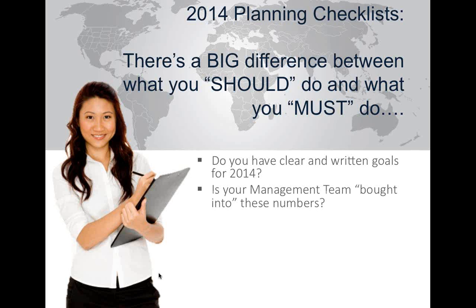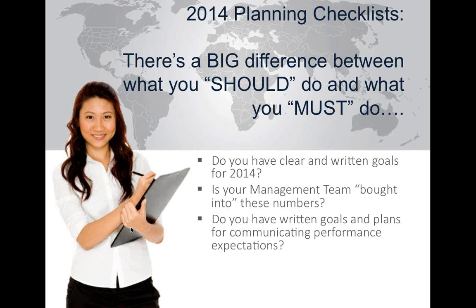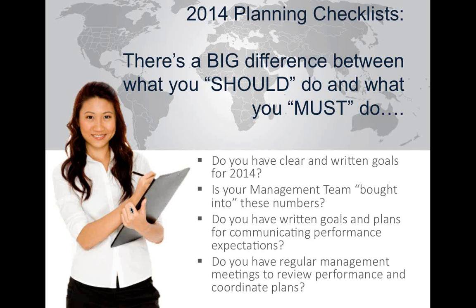Number two: if you've decided on your outcomes and goals for 2014, do you have your management team bought in? Management buy-in comes from your vision and communication about where the company is going, having it defined at the manager level, and having compensation models matched to incentivize and reward the behaviors you want. Do you have written goals and plans for communicating performance expectations? That comes down to detailed metrics and regular review processes so you know where you are on a weekly, monthly, quarterly, and yearly basis.